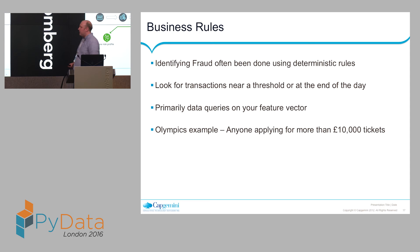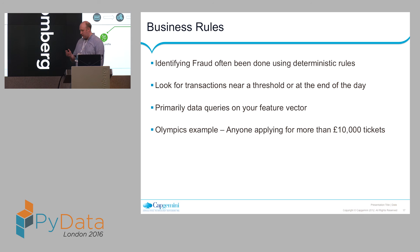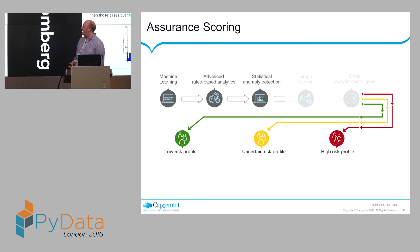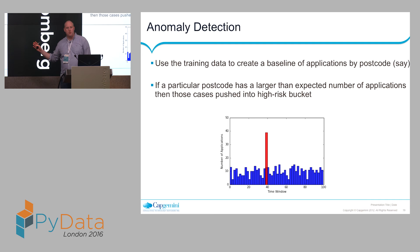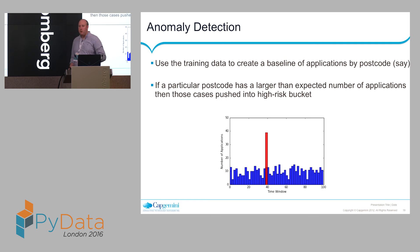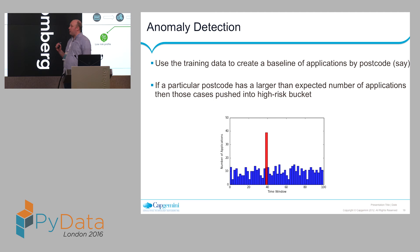The next step in the pipeline is statistical anomaly detection. We use training data to create a historical baseline of, say, applications per day, per month, per week, within a particular postcode. Then if a batch of applications from a particular postcode or county is way off the charts compared to what you'd normally expect, you would push all of those cases from the low-risk bucket into the high-risk bucket.